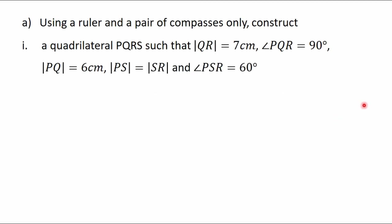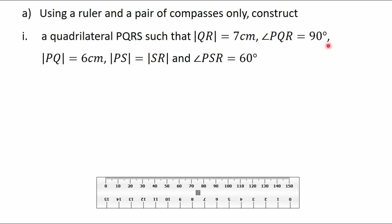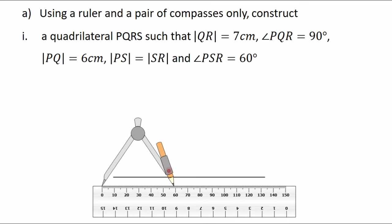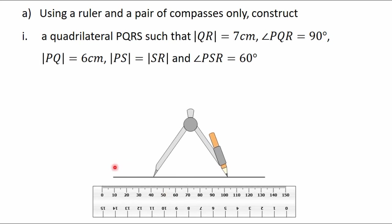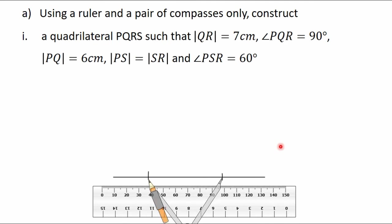Let's begin the construction. We take the ruler and draw a long horizontal line. The base side is PQ with length six centimeters. Take the compass, measure six centimeters on the ruler, put the needle on a starting point, and construct arcs to mark off both ends of the segment. This gives us point P and point Q, with the length of side PQ equal to six centimeters.